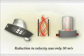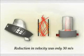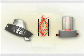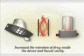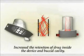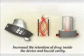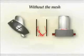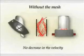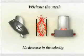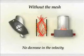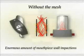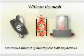Most available devices in our country have a non-uniform mesh. It was noticed that the reduction in velocity was only 30 meters per second, and therefore it increased the retention of drug inside the device and also the buccal cavity. Without the mesh, there was no decrease in velocity from the chamber to the entry or exit velocities, and an enormous amount of mouthpiece wall impactions took place, which obviously reduced the emitted dose.